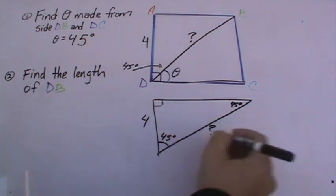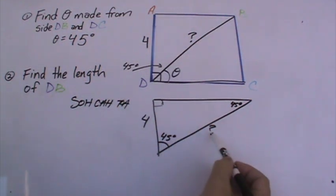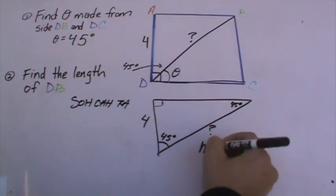So we have to think of SOHCAHTOA. If you're looking at this angle here, this is your hypotenuse here because it's across from your 90-degree angle.